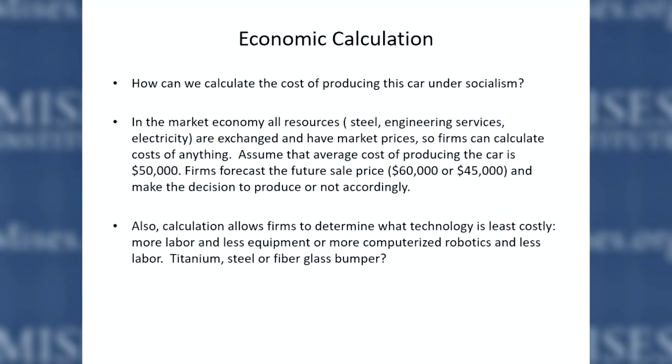Calculation also allows the firm to determine what technology is least costly. A titanium bumper is technically probably the best bumper, but we don't use that. We used to use steel because steel would reduce the cost of service repairs in case of an accident. But now with fiberglass and the way they can make it, fiberglass bumpers are used — even though it might increase the cost of repair, it reduces the weight and the cost of running the car so much that it's more valuable. All of these different decisions can be made rationally because of calculation.